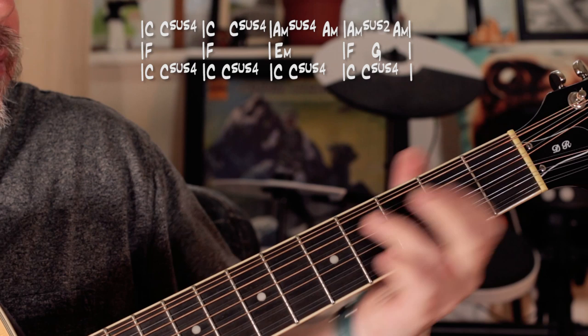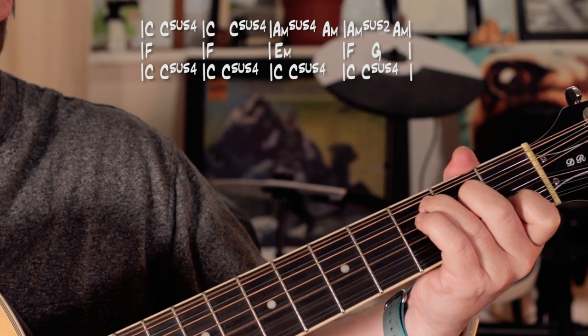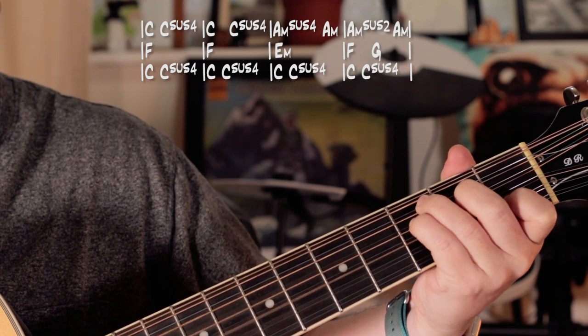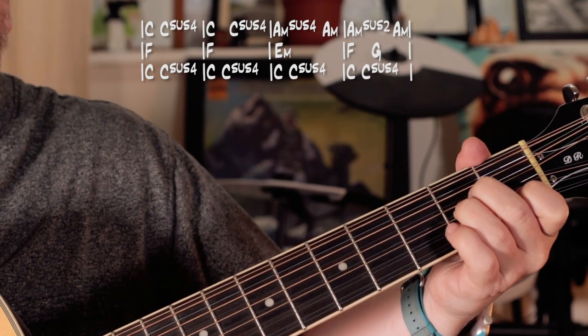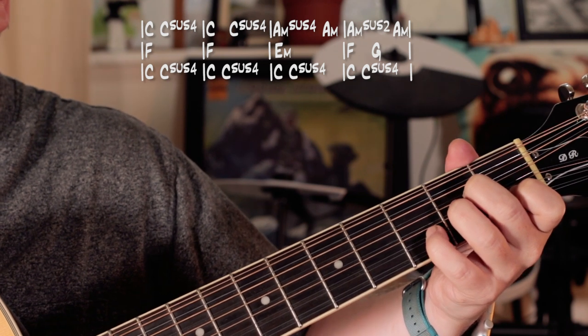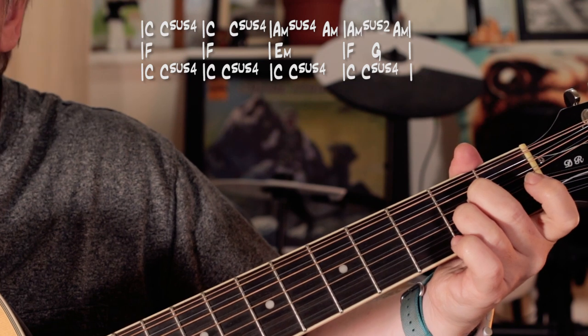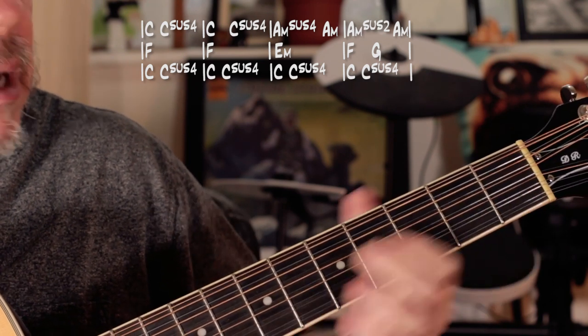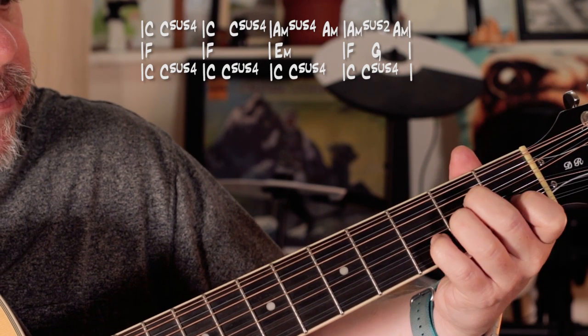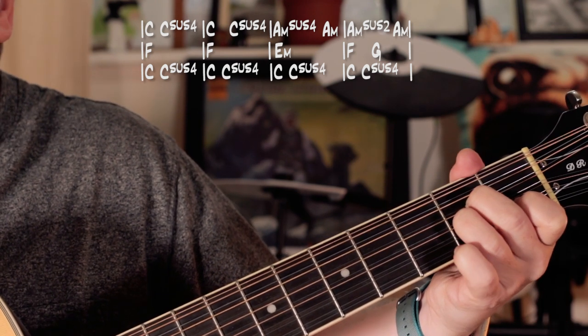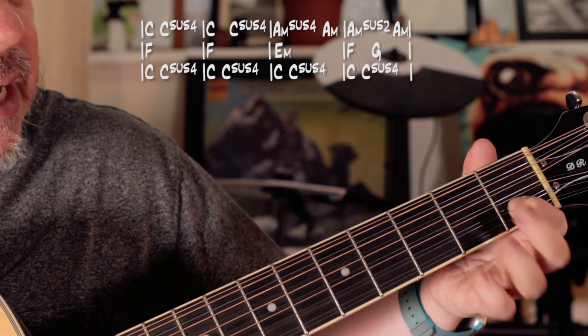Let's do the chorus. The chorus is very similar, two bars of C Csus4. And for the second chord it's an A minor, but I like to start on the A minor sus4, so I'm playing it starting with my little finger on the third fret.